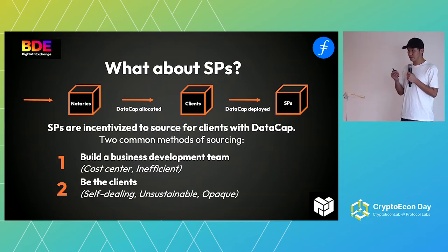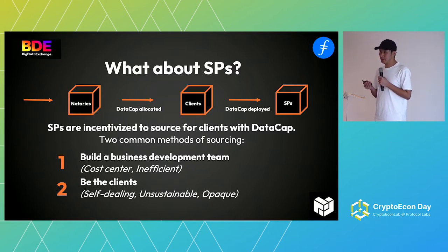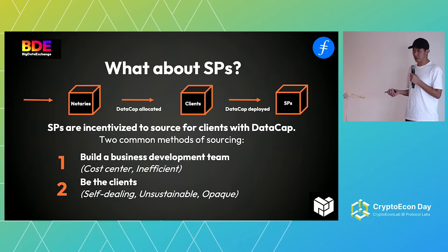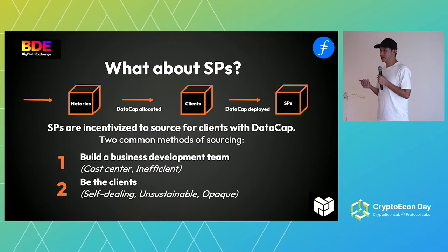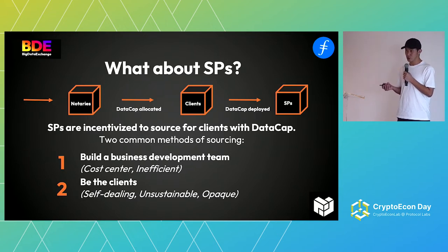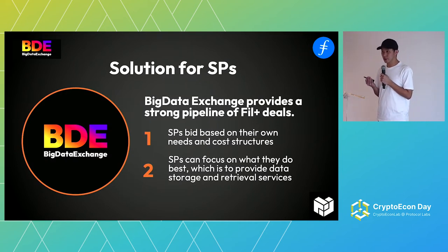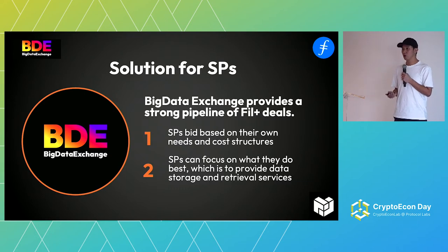Now that we've set up why clients will come to our platform, what about SPs? SPs are incentivized to do FIL+ deals, and there are usually two ways of getting those deals. First, you build a business development team — you go out and source deals. This is expensive and inefficient; sometimes the leads go nowhere. Second, you become the clients yourself — essentially self-dealing, which history has shown is unsustainable and opaque, and you may not even be able to get a data cap allocation. This is where we come in and give SPs a persistent supply of FIL+ deals so they can focus on providing data storage or retrieval services.